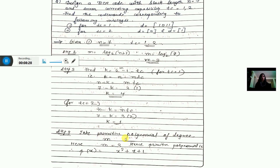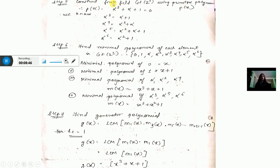Step 4: the primitive polynomial for degree M = 3 is x^3 + x + 1. Step 5: construct GF(2^3) using this primitive polynomial. Substituting X as alpha: alpha^3 + alpha + 1 = 0, so alpha^3 = alpha + 1. Then alpha^4 = alpha^2 + alpha, alpha^5 = alpha^2 + alpha + 1, alpha^6 = alpha^2 + 1.